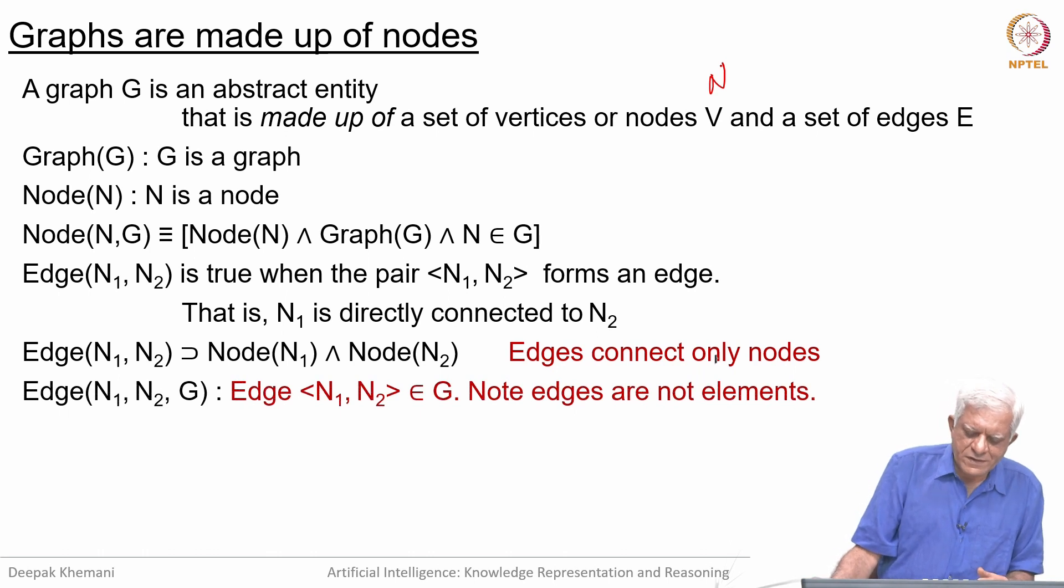An edge occurs only between two nodes, just like we said that two people can be married only if they are human. An edge can occur only between two things which belong to the category nodes. An edge can be part of a graph meaning the pair N1, N2 belongs to the graph G.